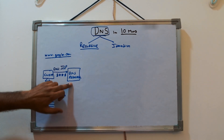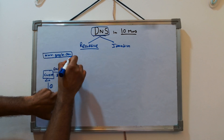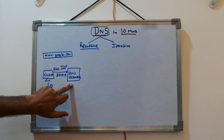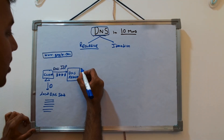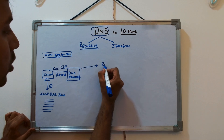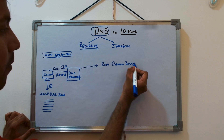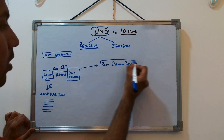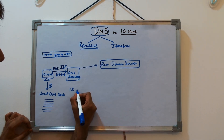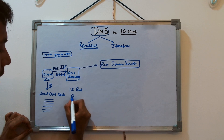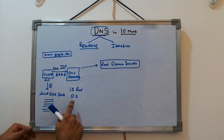Once the request reaches the DNS resolver, it checks its cache — does it have the IP of www.google.com? If yes, it returns. If not, it passes the request to the next level: the root domain server. There are only 13 root domain servers in the entire world.